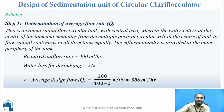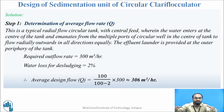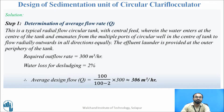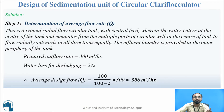We assume water from the flocculation unit spreads to the sedimentation unit through multiple ports. Since 2 percent of the flow is used for desludging, we need to add that 2 percent to the sedimentation unit flow. The average design flow rate is: Q = (100 / (100 − 2)) × 300 = 306 meter cube per hour.